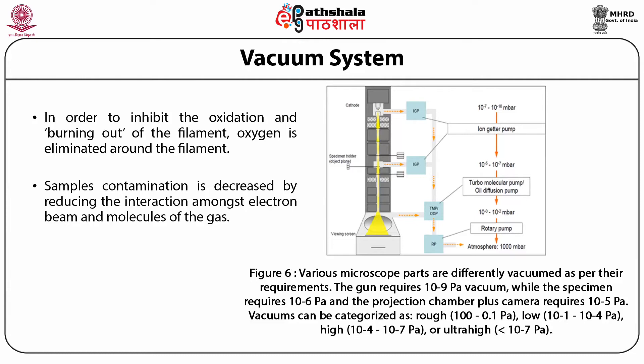The vacuum system consists of a rotary pump, a turbo molecular pump, an ion getter pump, and an oil diffusion pump. Various microscope parts are differently vacuumed as per requirements. The gun requires 10⁻⁹ pascal vacuum, while the specimen requires 10⁻⁶ pascal vacuum, achievable through a turbo molecular pump or oil diffusion pump. The projection chamber plus camera requires a pressure of 10⁻⁵ pascal, which can be achieved through a rotary pump.